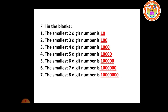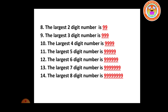The smallest eight-digit number is 1 crore. The largest two-digit number is 99. The largest three-digit number is 999. The largest four-digit number is 9,999. The largest five-digit number is 99,999. The largest six-digit number is 9 lakh 99,999. The largest seven-digit number is 99,99,999.